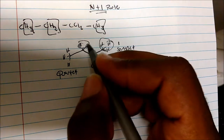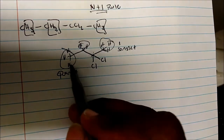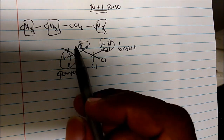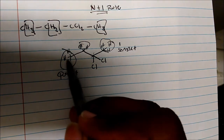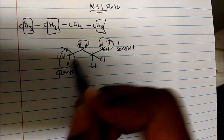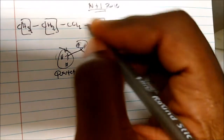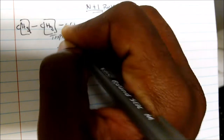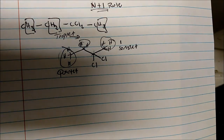Similarly for this other CH3 group — these three protons: I would only see one signal, but what will be the splitting pattern? I have two hydrogens neighboring these protons. So two plus one is three, and therefore we would see a triplet on the NMR spectrum for the splitting pattern of these protons.